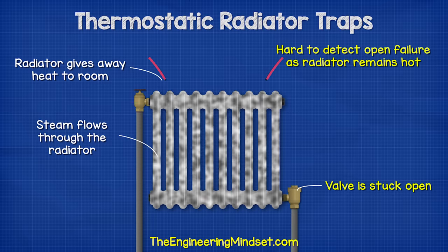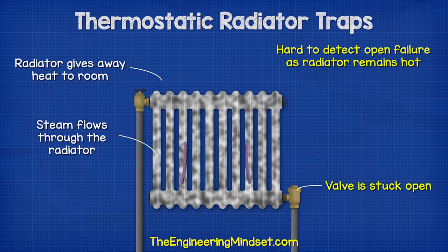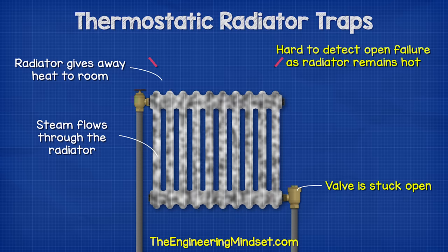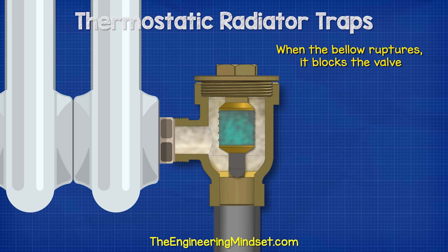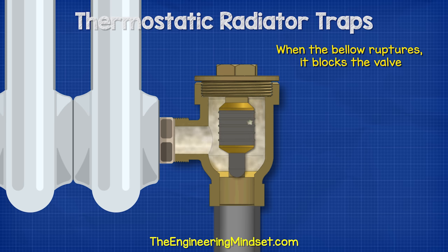An open failure can be very hard to detect because steam is still flowing through, so the radiator will still be hot. The other type of failure is a closed failure. When the bellow ruptures, it drops and blocks the valve, effectively closing it. During normal construction, the bellow hangs freely and blocks the outlet; water is placed inside and a vacuum is formed to draw out the air, causing the bellow to rise up and compress. If the bellow ruptures it drops and blocks the outlet, the radiator will eventually stop giving out heat, and you can tell the valve has failed.